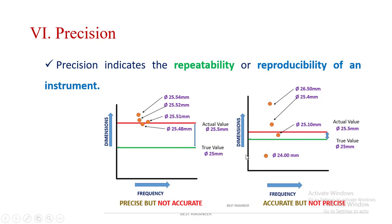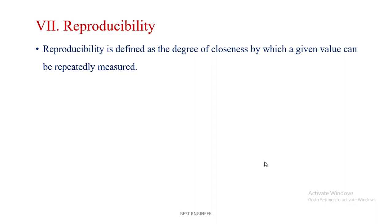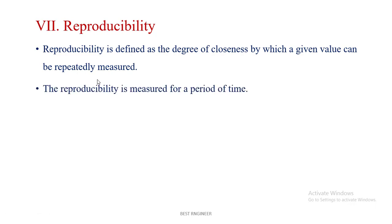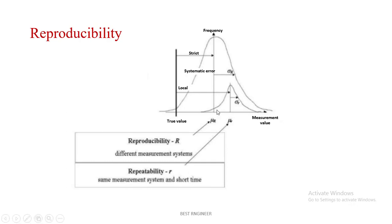In another example with the same axes, when the error is reduced, we can say it is more accurate but not precise because the values are not close to each other. Reproducibility is defined as the degree of closeness by which a given value can be repeatedly measured over a period of time. Perfect reproducibility means readings taken for the same input will not vary with time. Reproducibility across different measuring systems giving the same values is reproducibility; repeatability means showing the same value over the shortest time interval.